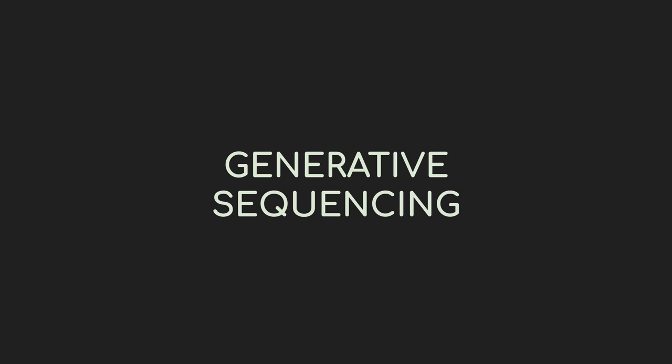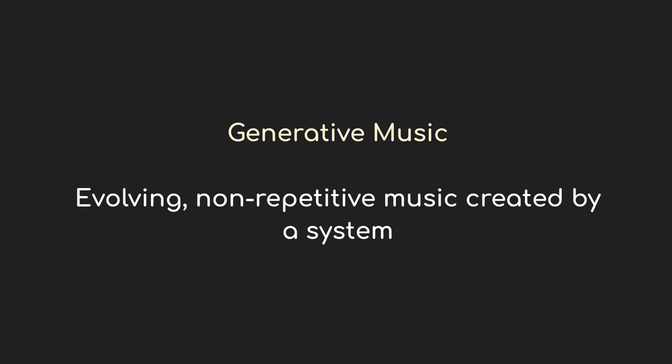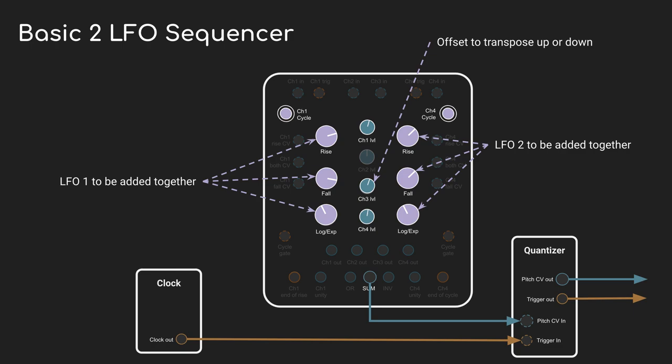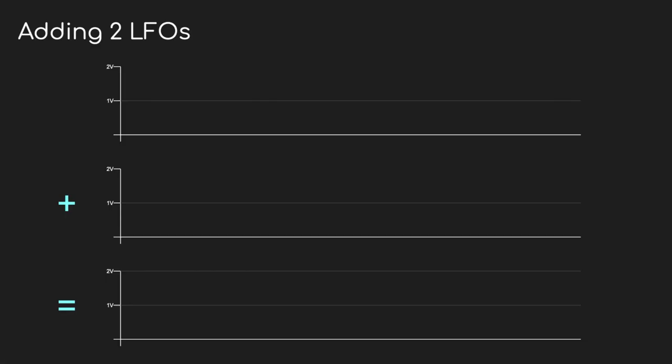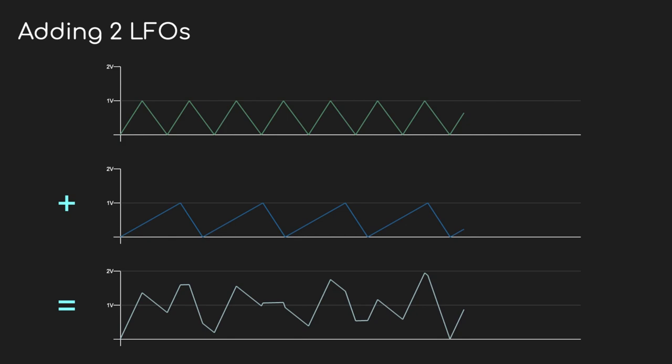So this is a fun one, and a broad topic that deserves a video all its own. The term generative gets misused a lot, but a good description is: generative music is evolving, non-repetitive music created by a system. The music has to change and evolve, it shouldn't be repetitive, and it needs to be created by some sort of intentional system. For this video, I'm just looking at the repeating but not repetitive aspect, and the basic tool is going to be a two-LFO sequencer. The whole idea is based on adding two LFOs together — here we can see the output of two LFOs on the top, and at the bottom is their sum. You can see that it still rises and falls, but less regularly, and sometimes you get occasional steep changes and plateaus.